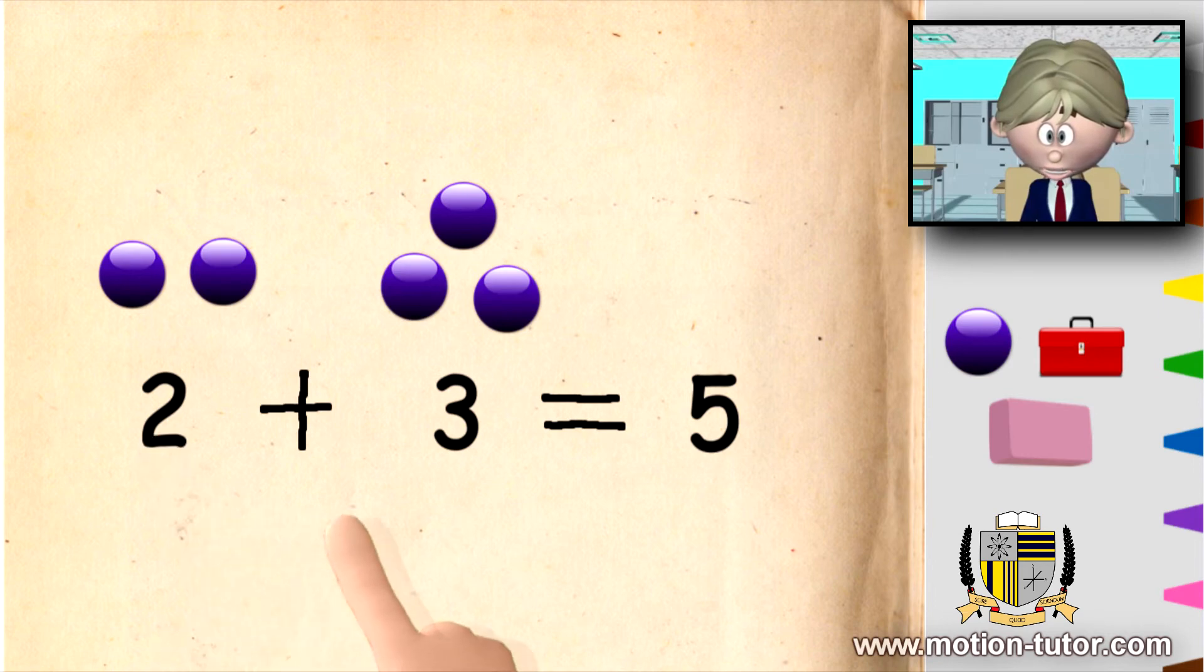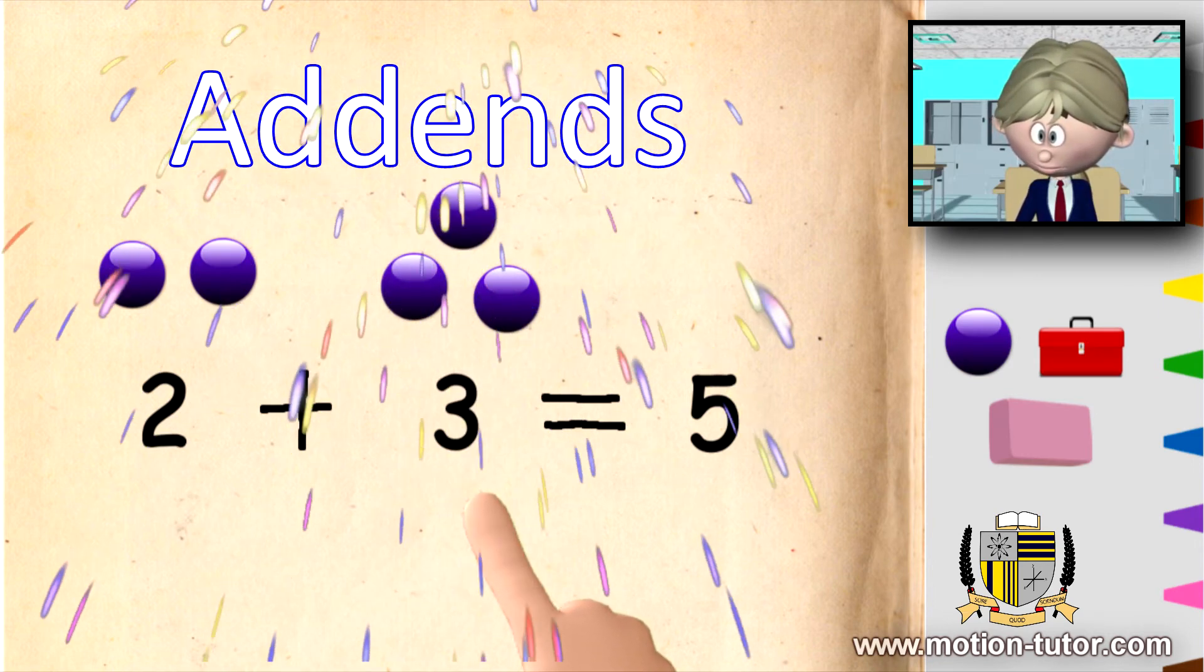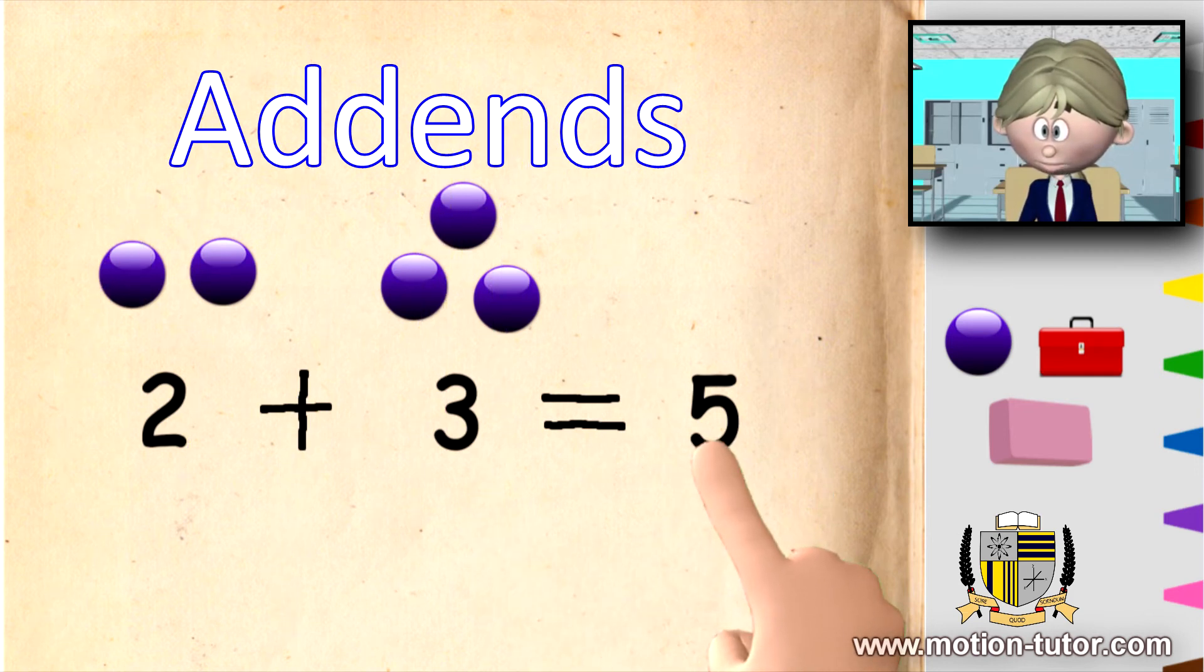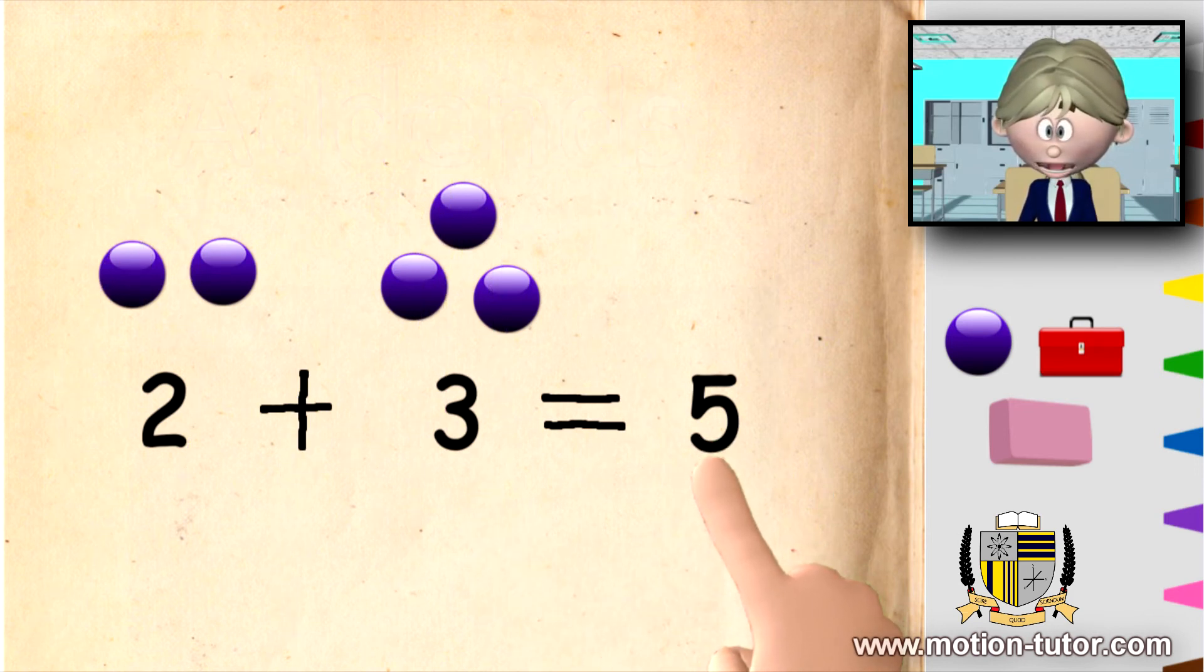The two and the three, they are called addends. And the five, which is the answer, is called the sum.